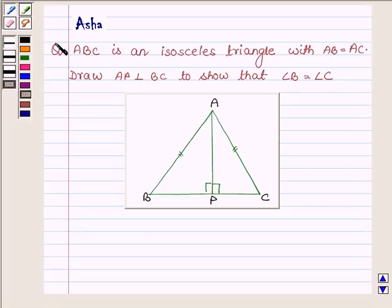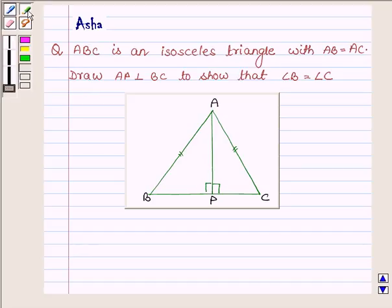Hello and welcome to the session. I am Asha and I'm going to help you with the following problem which says: ABC is an isosceles triangle with AB equal to AC. Draw AP perpendicular on BC to show that angle B is equal to angle C.